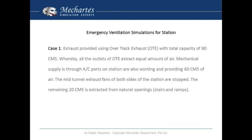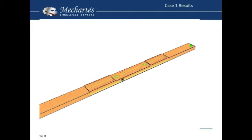We tried various cases. In the first case, we proposed to install the overtrack exhaust, which is installed over the railway track, of 80 CMS of certain quantity. The air conditioning inlets were supplying the fresh air, and remaining 20 CMS was coming from natural openings. In this model, this is the station, this is the source of the fire. The red dots are the exhaust points, and the green dots are the supply points in the system.